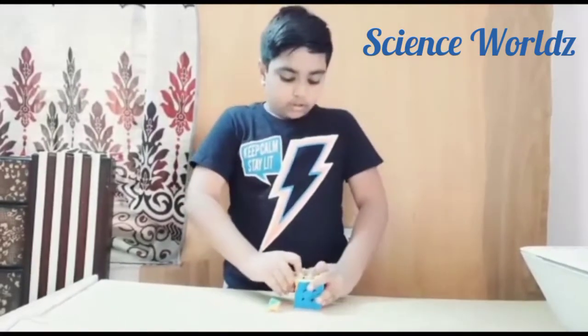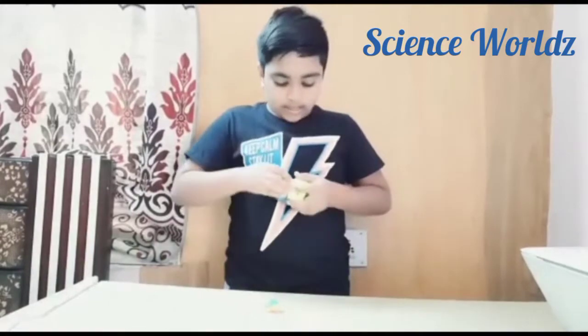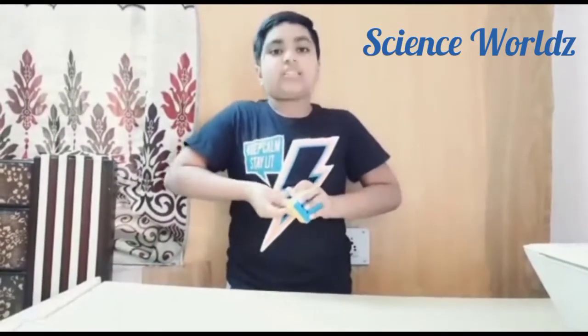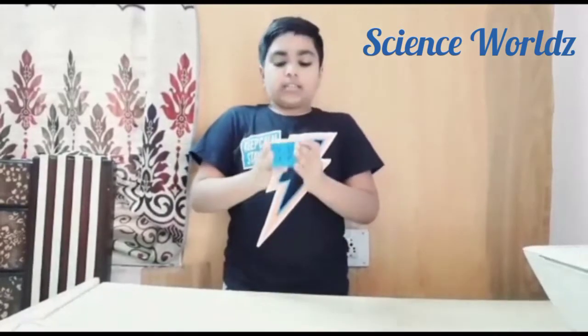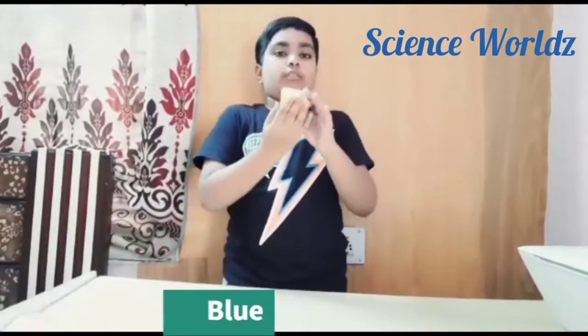Now, let's go to the opposite colors. As the name suggests, it shows the colors which oppose each other. Such as white always opposes yellow, green always opposes blue, and orange always opposes red.